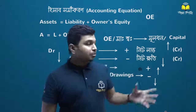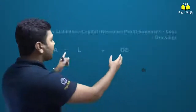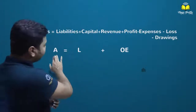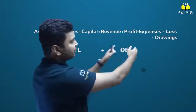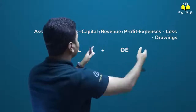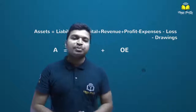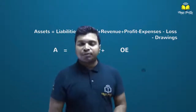So, we are going to talk about the real example of Hissab Swamikaran. We are going to talk about this equation. First, we are going to talk about Hissab Swamikaran. So, we are going to explain the owner's equity. The owner's equity is the capital. The capital is the capital.